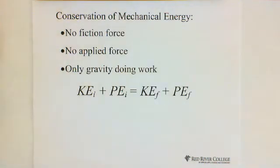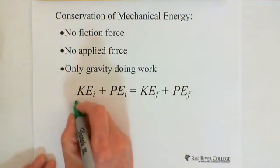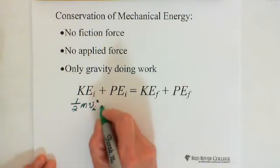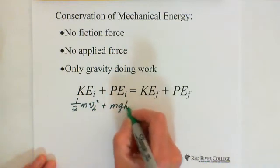So when we apply conservation of mechanical energy, that means all the time the total mechanical energy is conserved. So we can write: initial kinetic energy plus initial potential energy equals final kinetic energy and final potential energy. So the kinetic energy we can write as 1/2 M V_initial squared, and the potential energy is M G H_initial.